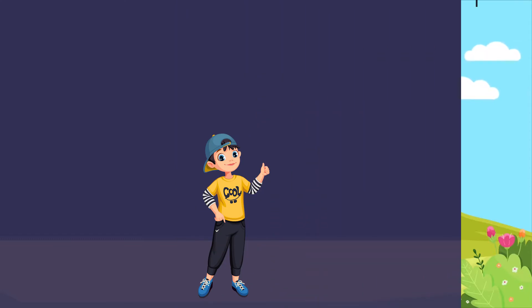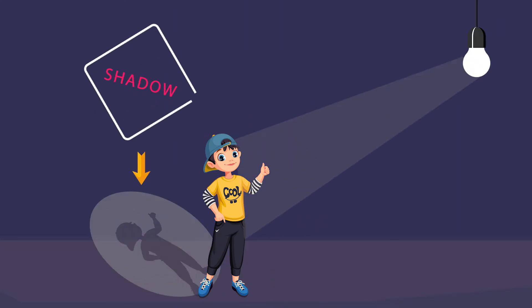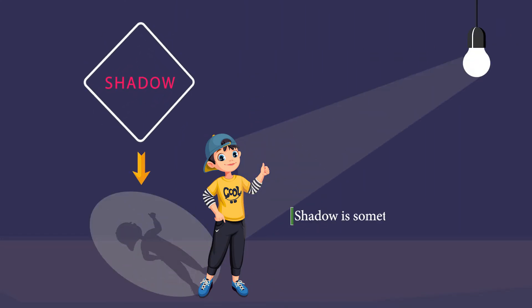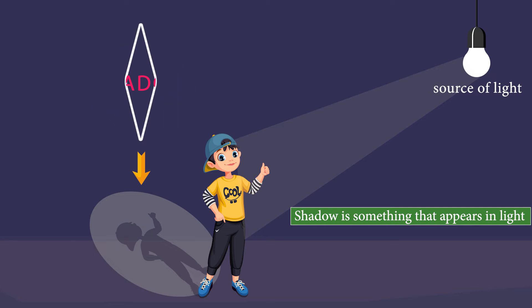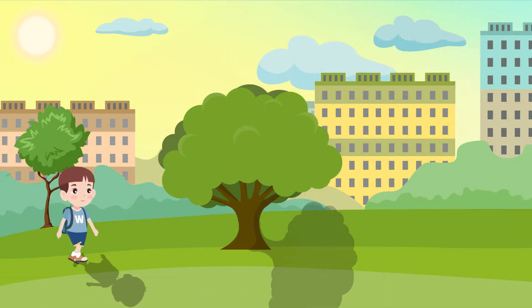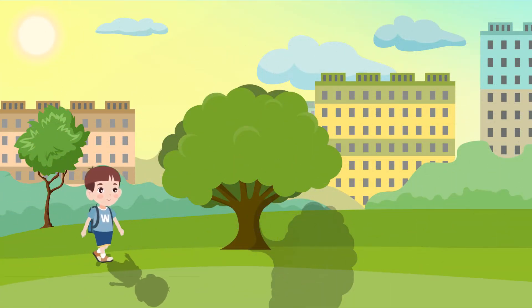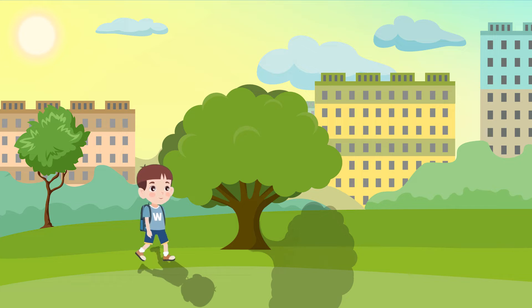Yes, you are right! We are talking about our shadow. Shadow is something that appears in light. Look at this boy going to school — you can clearly see his shadow along with him.